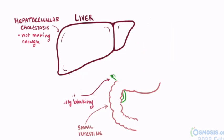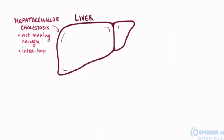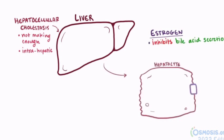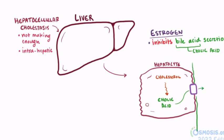For hepatocellular cholestasis, which would be considered a form of intrahepatic cholestasis since it's happening inside the liver, a really important culprit is the hormone estrogen. Estrogen is thought to cause the hepatocytes to not be able to pump out bile acids, usually in the form of cholic acid, which is produced when hepatocytes break down cholesterol. The estrogen inhibits the export pump that usually moves the bile acid from the hepatocyte to the bile canaliculi, which leads to the bile ductules and eventually the common hepatic duct.